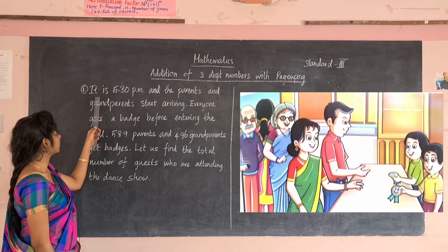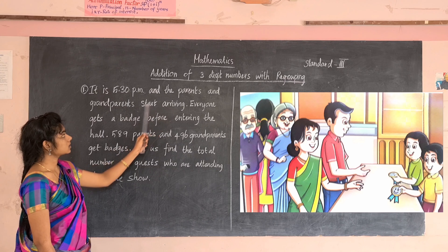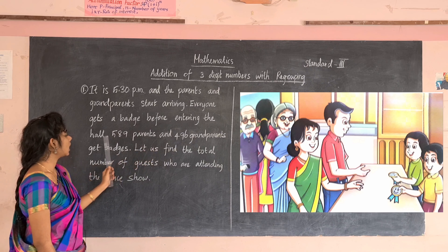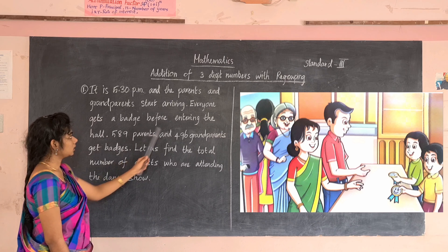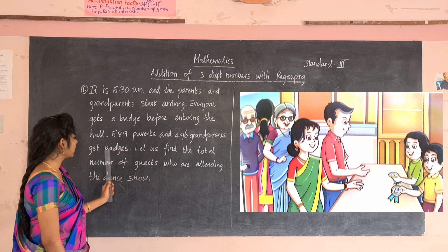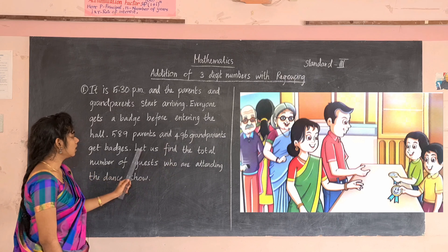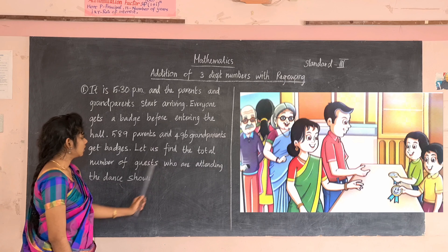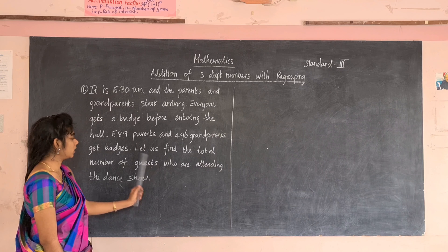The first question refers to a picture. It is 5:30 PM — evening — and parents and grandparents start arriving. Everyone gets a badge before entering the hall. The students are giving badges to the parents. That is, 589 parents and 496 grandparents get badges. We have to find the total number of guests — both parents and grandparents — attending the dance show.